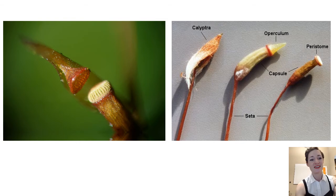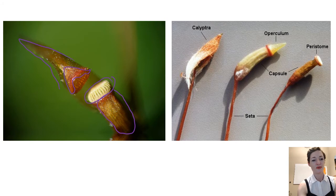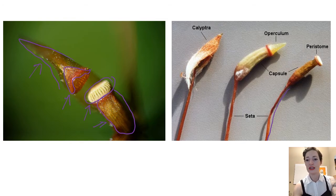Here's a nice picture. We can see the calyptra, which is on top of the operculum, which is covering the peristome, which is at the end of the capsule. So all of those are parts of our sporophyte: calyptra, operculum, peristome, capsule. And then at the base we have the seta, which is the stalk that holds the whole structure up. All of this tissue is diploid except the calyptra, which is haploid.